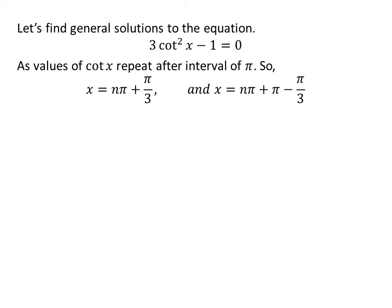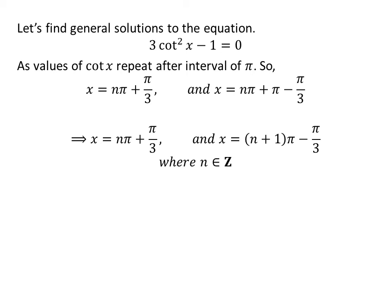So the general solutions are n times pi plus pi upon 3, and n times pi plus pi minus pi upon 3, where n is an integer. Further simplification gives us the general solutions are n times pi plus pi upon 3 and n plus 1 times pi minus pi upon 3.